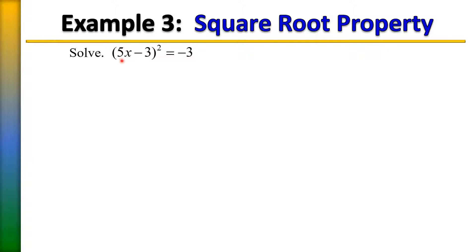Here we have our squared term on one side: 5x minus 3 squared. And here's our constant on the other side: we have negative 3.